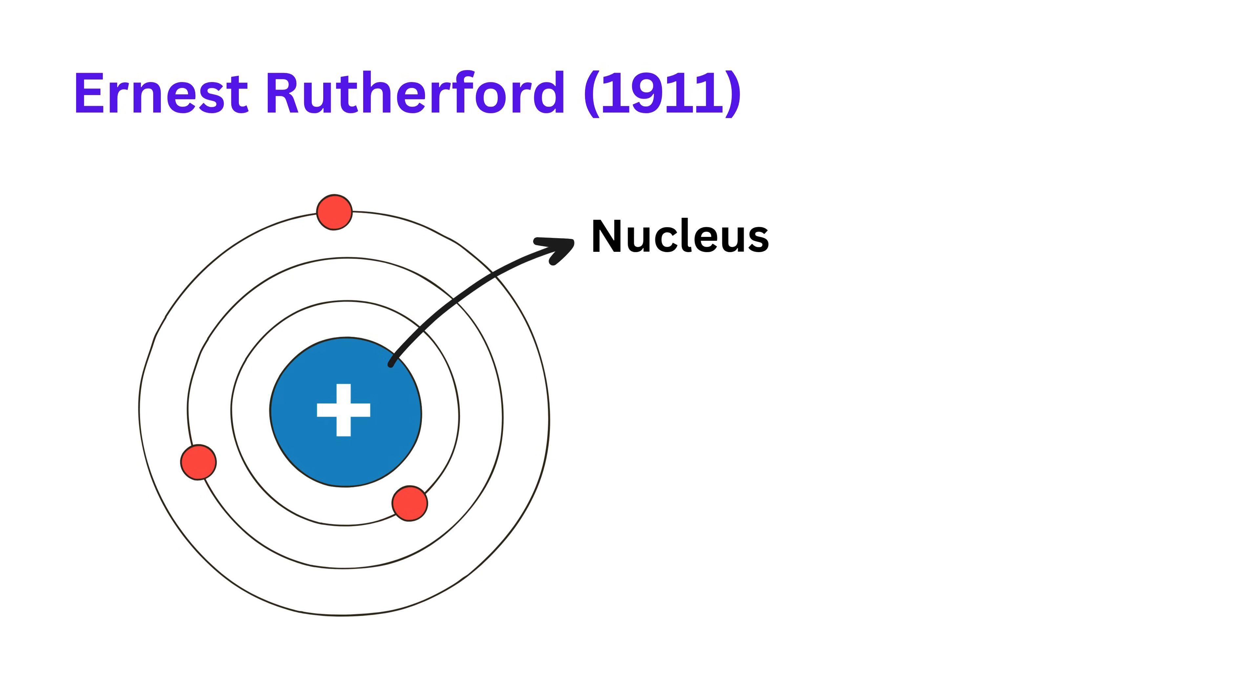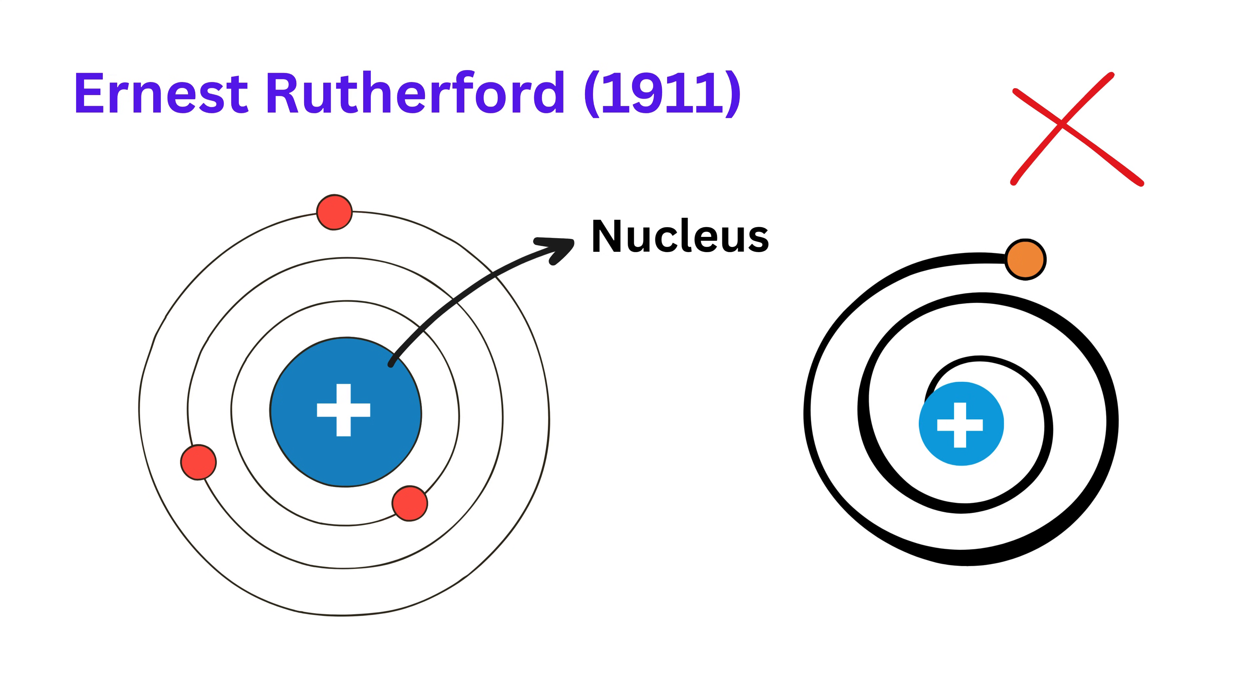According to classical physics, if electrons were moving in circles, they would lose energy and spiral into the nucleus, making the atom collapse. But clearly, atoms are stable.